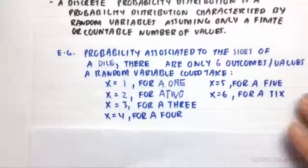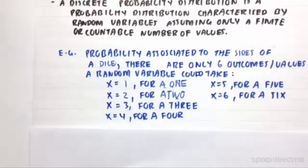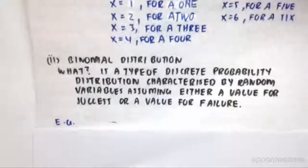This is contrasted with a continuous probability distribution, which has an infinite or uncountable amount of values inside the sample space. The sample space itself has an infinite amount of possible outcomes.